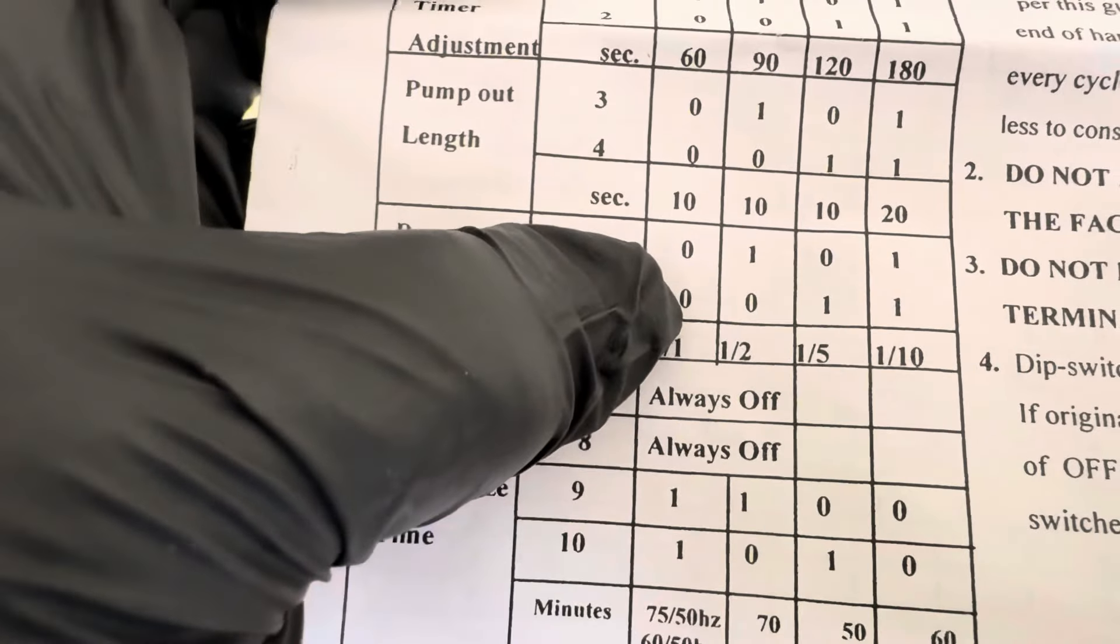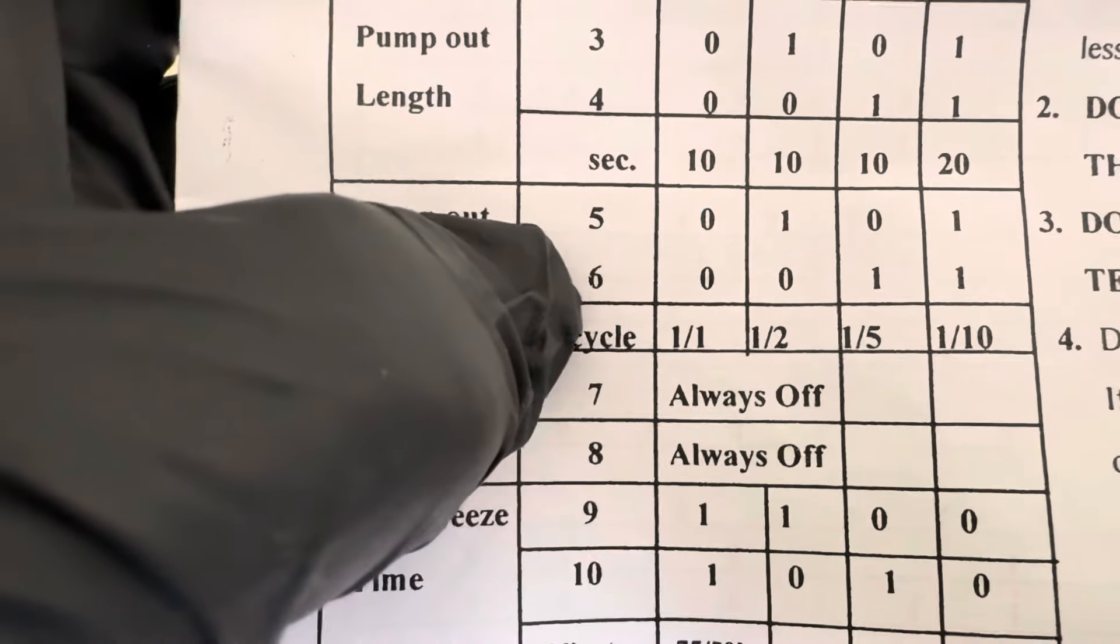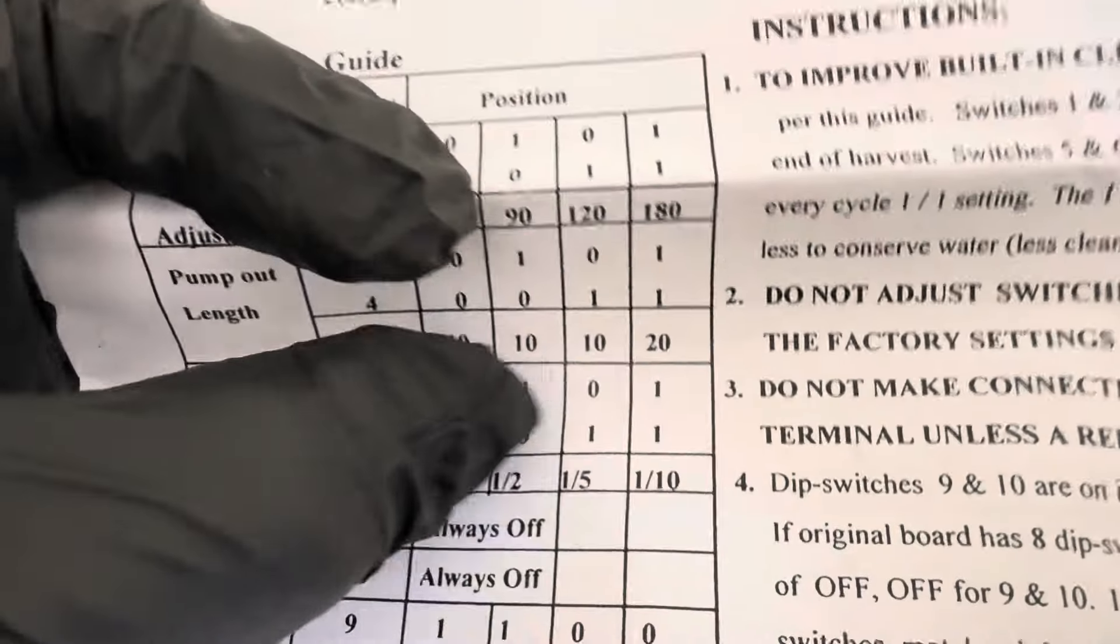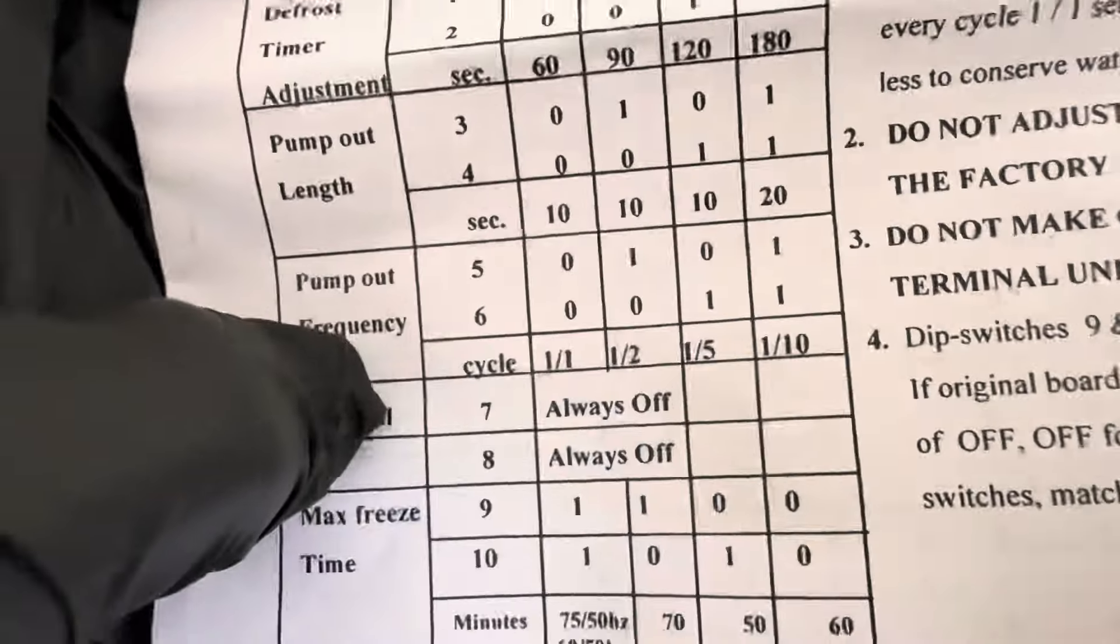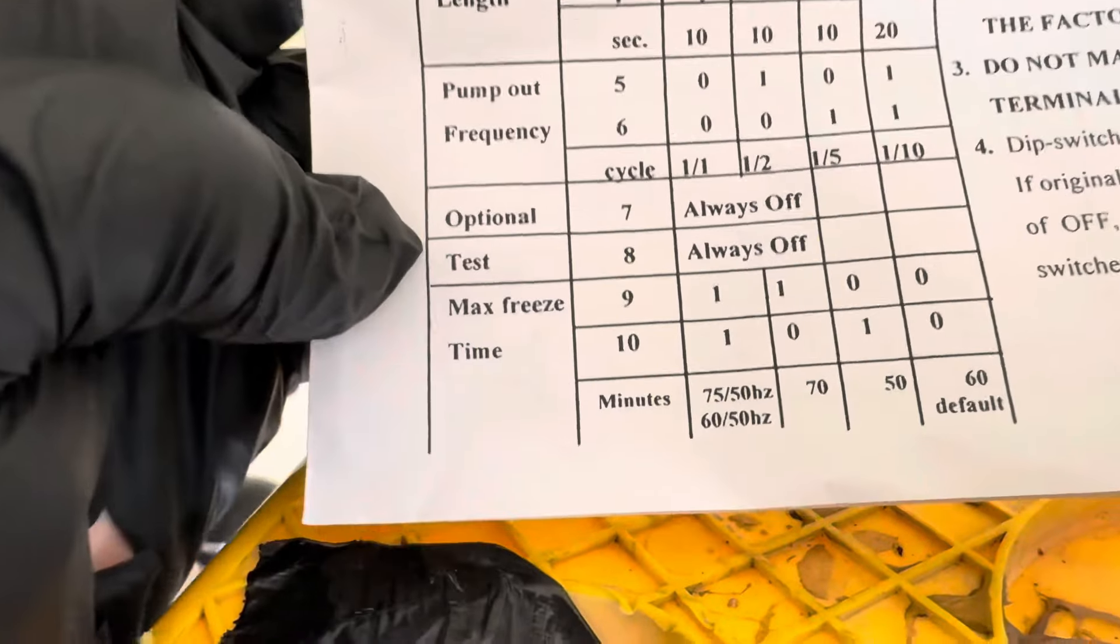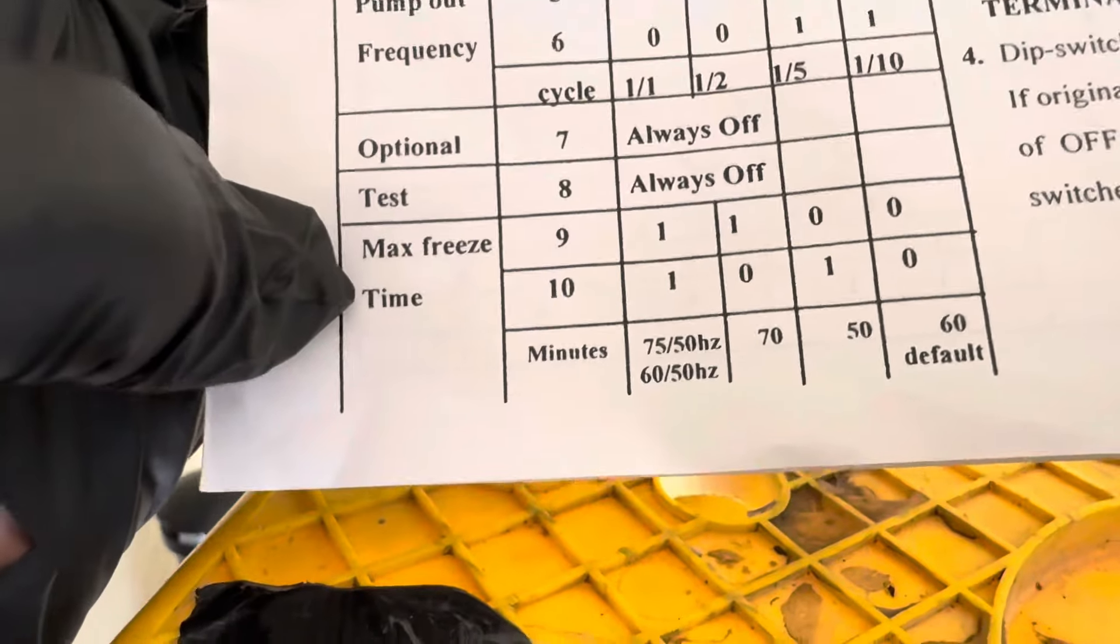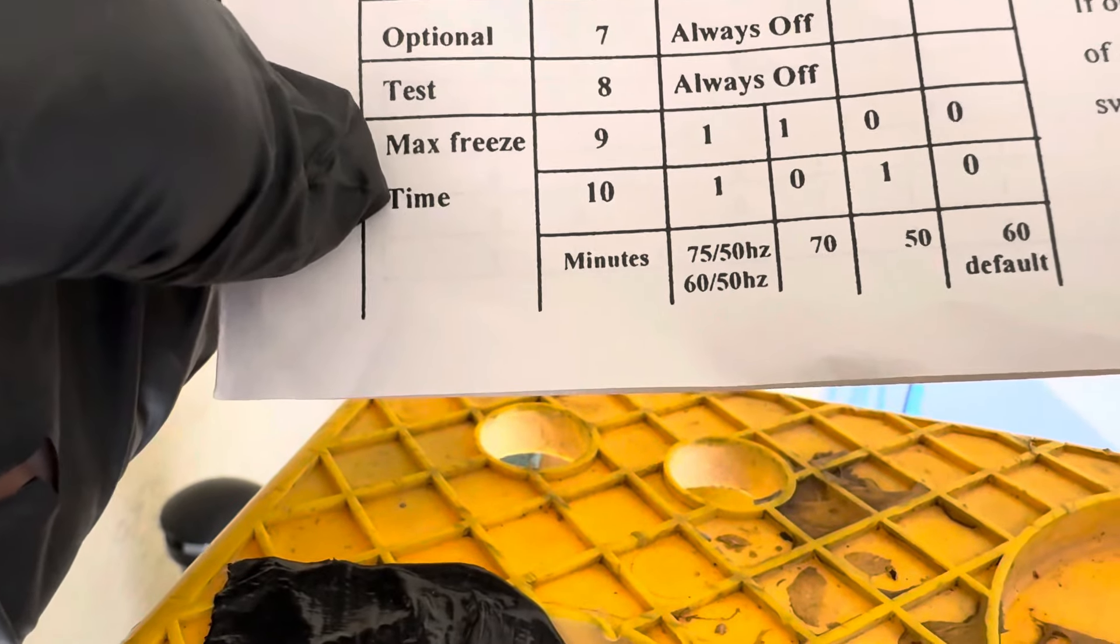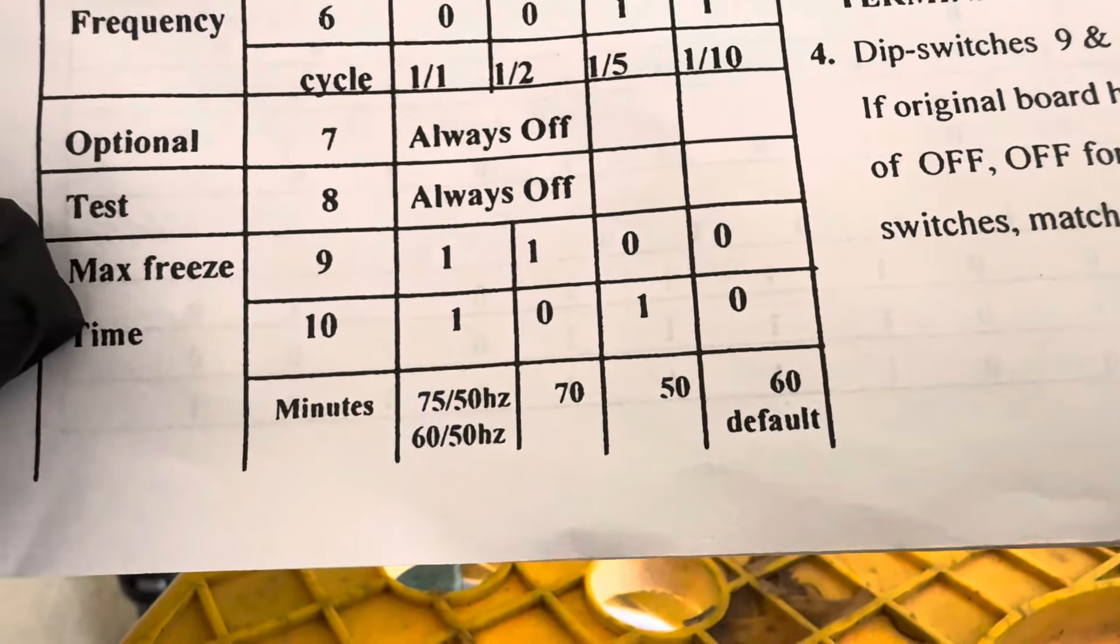If you've got hard water, you want it to pump out every single time, put 5 and 6 to zero. If you want to try and save water, put them at 1 and 1. 7 and 8 are always off, and then your maximum freeze time. Default is zero, zero. Works out good, 60. You can bump it up to 70 minutes.